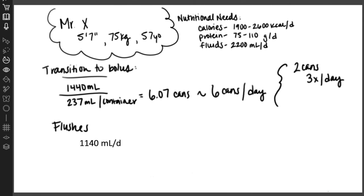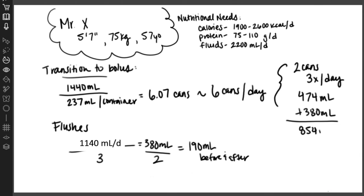We also need to create our flush schedule. Mr. X requires an additional 1,140 milliliters of water per day in the form of water flushes. Typically we will split the total flush volume by the number of feedings. We'll divide 1,140 by three, which is 380 milliliters. We'll flush with half of that volume before and after each feeding, which equates to 190 milliliters of flushes before and after. With the formula and flushes, this gives us a total volume of about 860 milliliters. Although some patients can tolerate this volume, most patients best tolerate a total volume of about under 500 milliliters at a time.